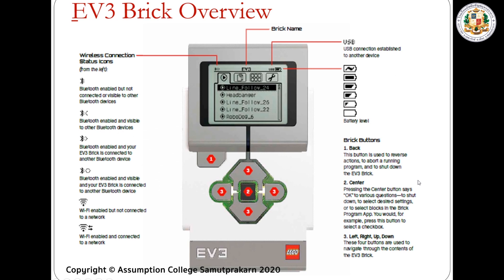EV3 brick overview — these are the parts of the brick controller. On the top left part of the screen you will see the wireless connection options. In the middle we have the brick name; by default this is always EV3, but you can change it to your name or any name you want. There is also a USB indicator — when your brick controller is connected to the computer, you will see USB displayed. Next we have the battery level indication.